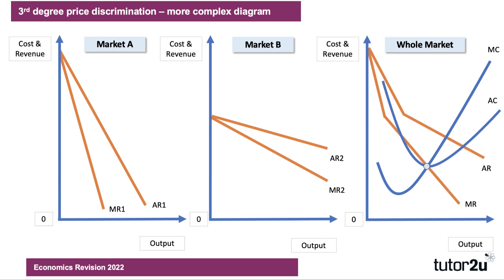Now, if we add the demand up for the whole market, you get a slightly quirky demand and marginal revenue curves. But the key is if we take the whole market together, we might want to profit maximise where marginal cost meets marginal revenue at output Q1. That would allow us to set a price P1 and also have a cost C1. So there is a profit to be made if you just charged a single price, and that's shown by the green area.